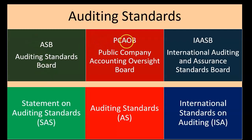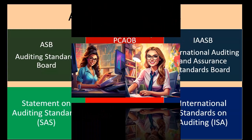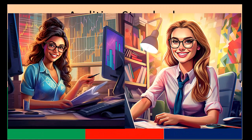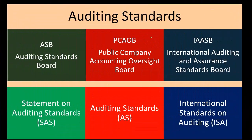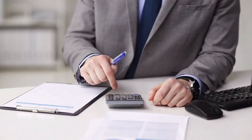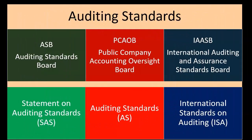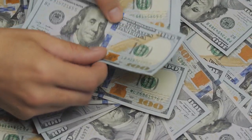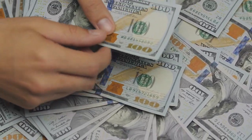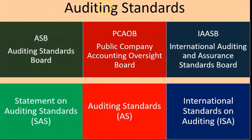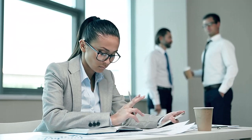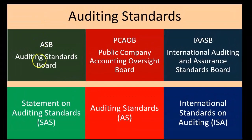So we have the ASB, the PCAOB, and the IAASB as the standards setters. The ASB is for non-publicly traded companies. The PCAOB was set up by the Sarbanes-Oxley Act for publicly traded companies. And of course the IAASB, the International Auditing and Assurance Standards Board, sets standards at the international level.